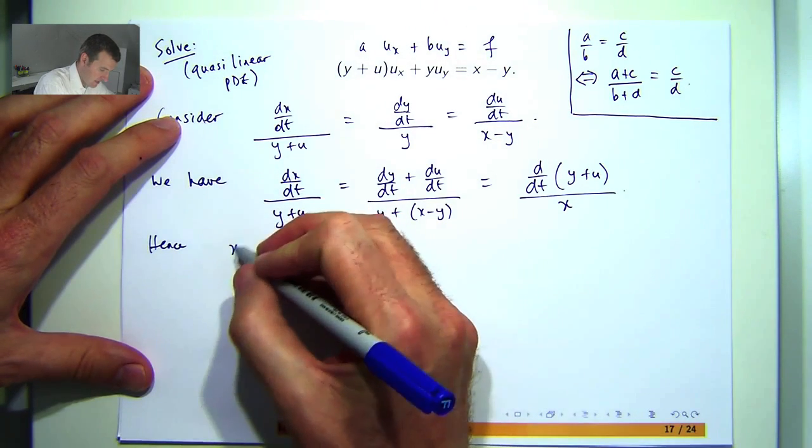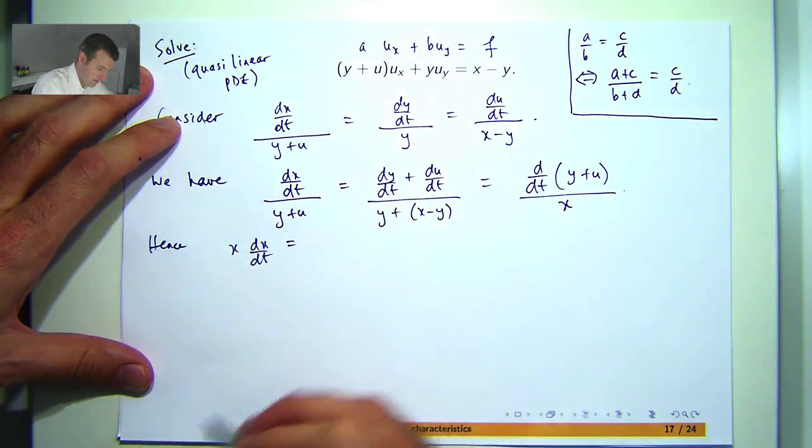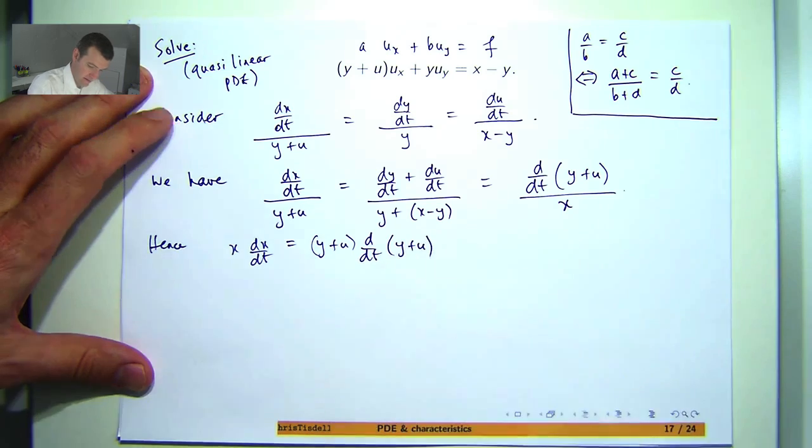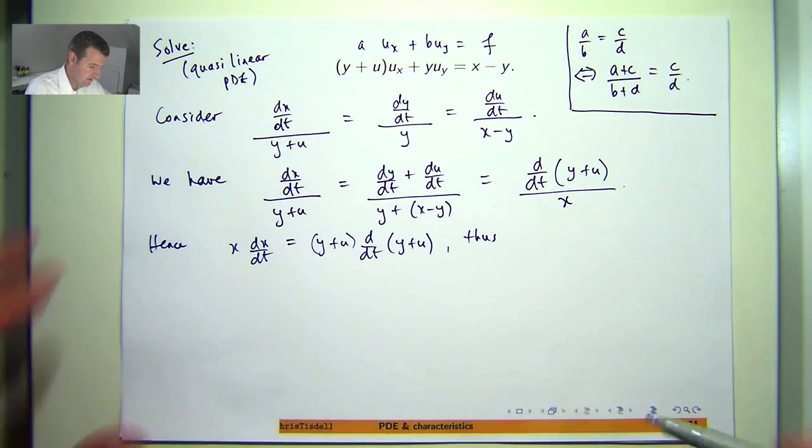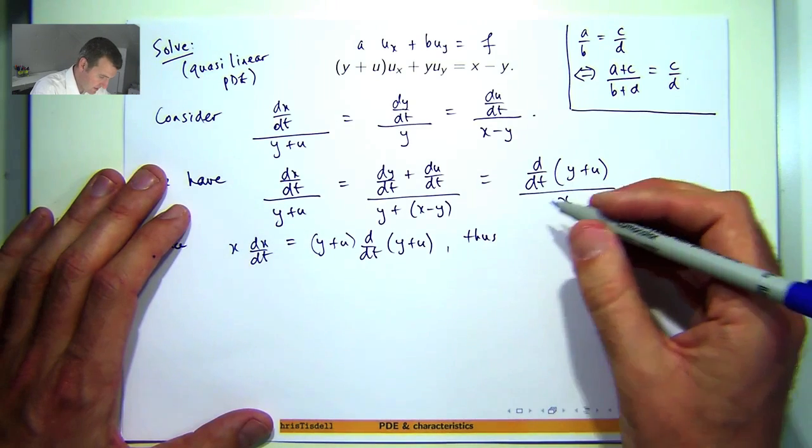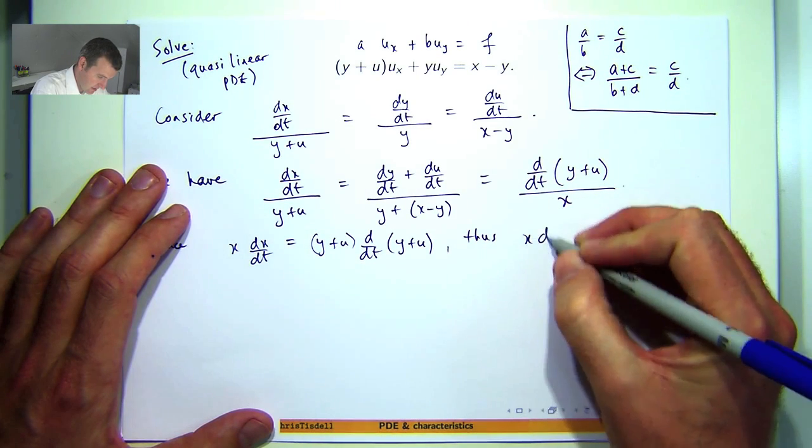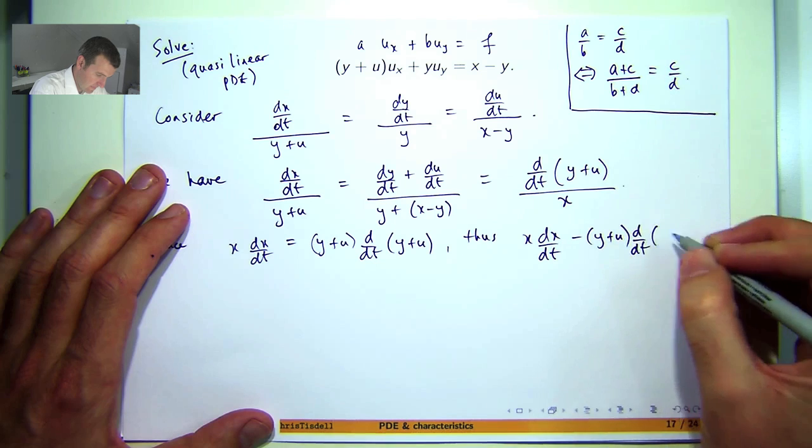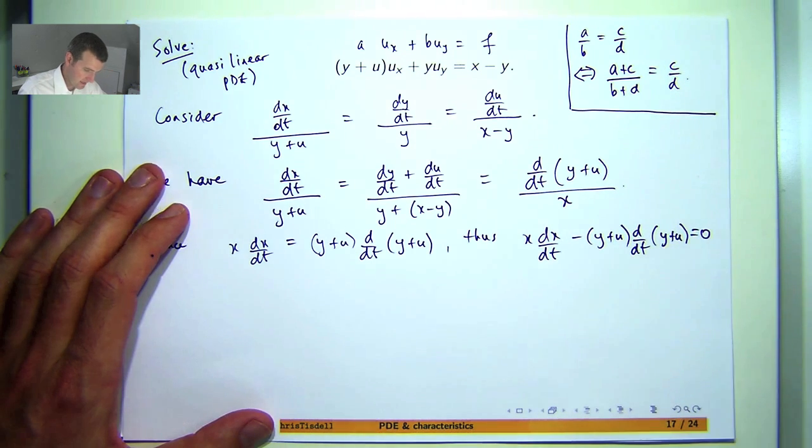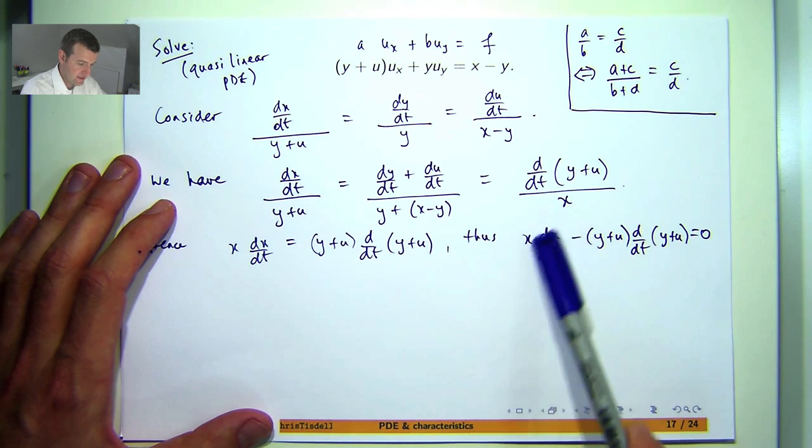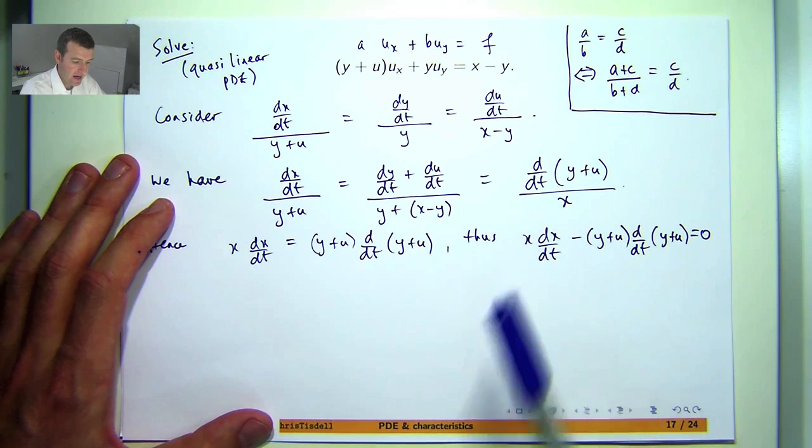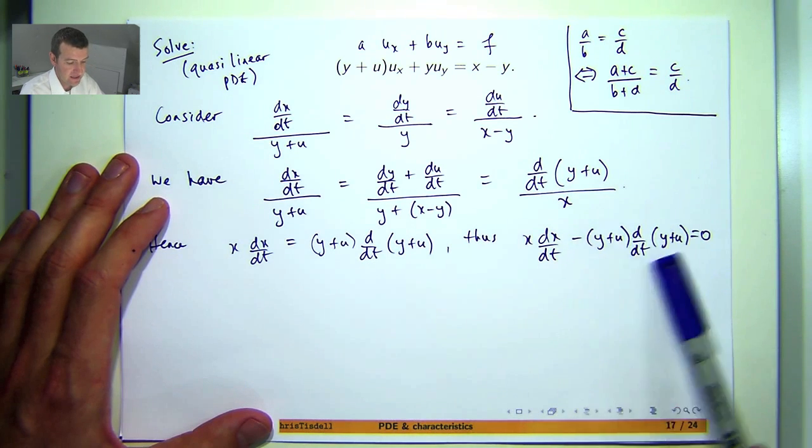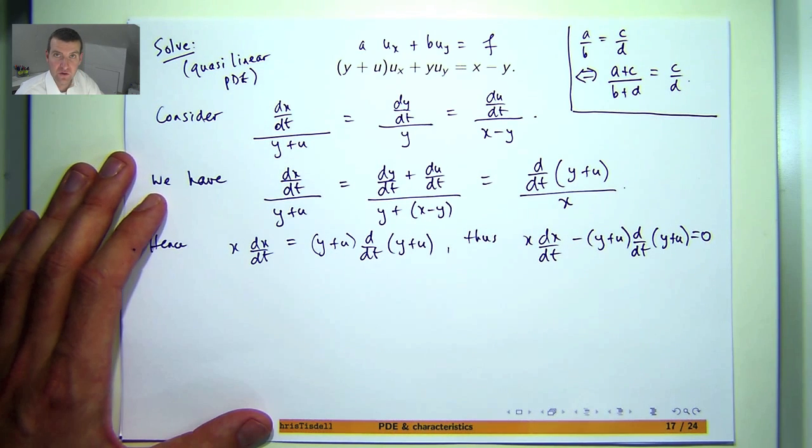So let's combine these two and see if we can simplify. So I'm going to bring that up there. And I'll bring the y plus u up there. So let's move one of these to the other side. I'll move it like this. That's zero.